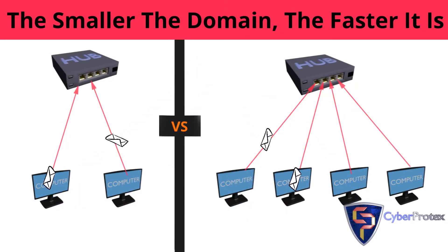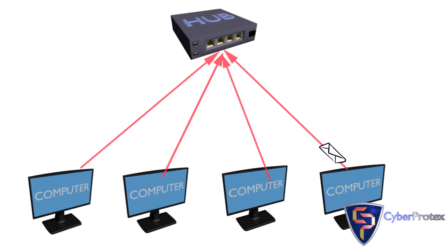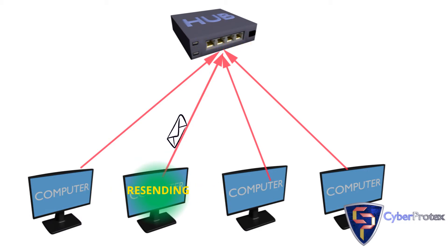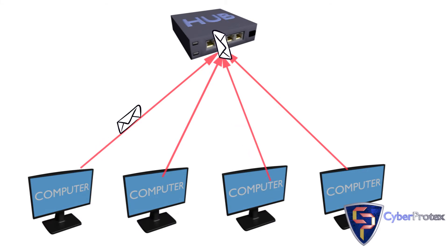Remember, the smaller the size of the domain, the more efficient it is. All devices in collision domains have to pay attention to each other's messages, no matter if it's for them or not. This prevents the messages from colliding with each other. When messages collide, the device is forced to send out another message. This is why more devices in a domain equals less efficient.